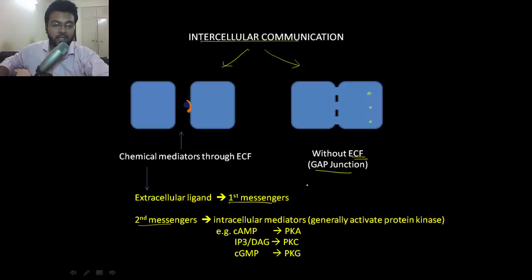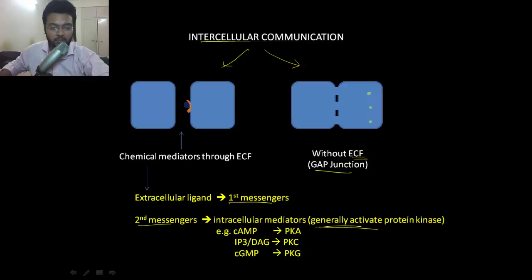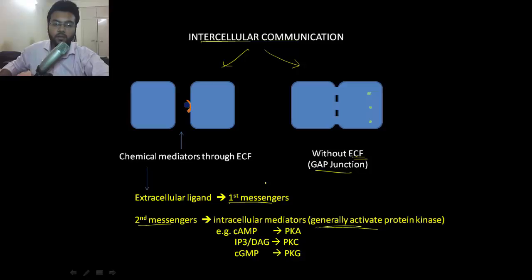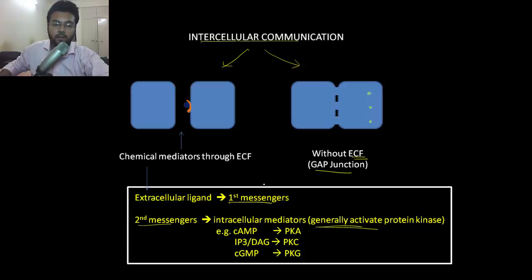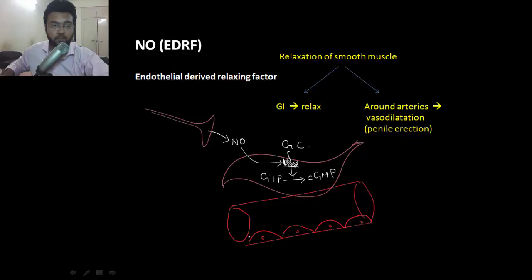Second messengers are the intracellular components present inside the cell. By definition, these are generally those which activate protein kinases — for example, cyclic AMP which activates protein kinase A, cyclic GMP which activates protein kinase G, or inositol triphosphate or diacylglycerol.